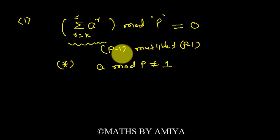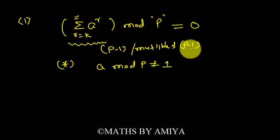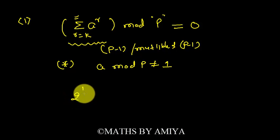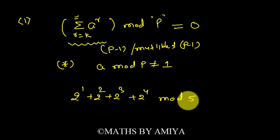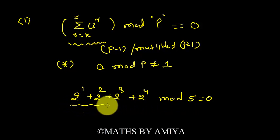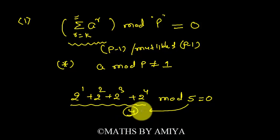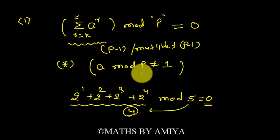When we are adding consecutive powers of a and dividing by a prime p, the remainder is zero if the total terms is either p minus one or a multiple of p minus one. For example: 2^1 + 2^2 + 2^3 + 2^4 divided by 5. This is the sum of four consecutive terms. When divided by 5, remainder should be zero, because 5 is prime and the total terms is four, which equals p minus one.